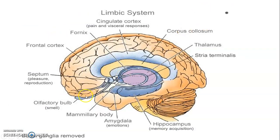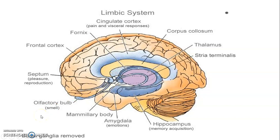So looking again — olfactory bulb, tract, olfactory stria lateral and medial, all these are parts of the limbic system. Then we have the hippocampus, together with the dentate gyrus and the indusium griseum, will form the hippocampal formation. Then we have parts of the fornix — the anterior columns, the body, the posterior columns, and the fimbria are also components of the limbic system. The anterior column communicates with the mammillary bodies of the hypothalamus. Then we have the septum pellucidum, the cingulate gyrus, the thalamus, and the striata that also participate in the limbic system.